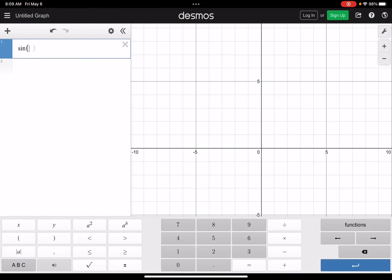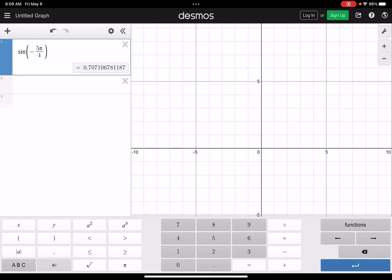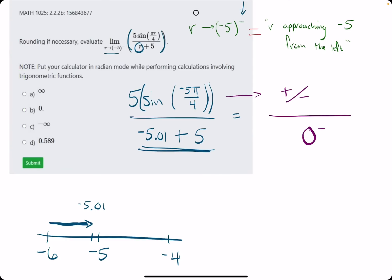It's sine of negative 5 pi over 4. That is positive. Let me make sure I'm in radians. Yep, we're in radians. It was multiplied by 5, but regardless, it's still a positive value. We get this positive 3.5-ish value.